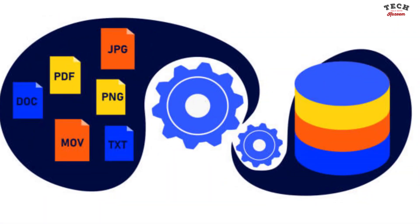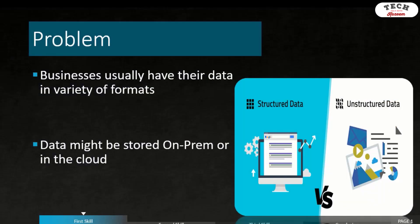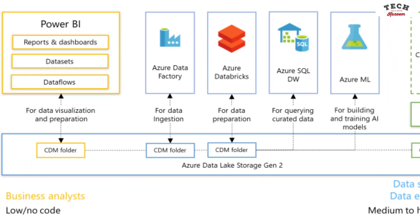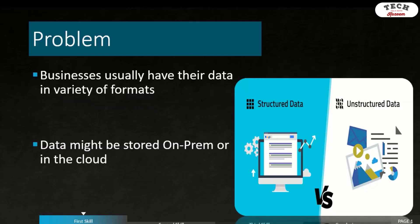This data that businesses have is usually stored in a variety of formats. Some of them structured, like the data stored on SQL Server. Some are semi-structured, such as data stored as JSON, XML file, and so on. And some of them are unstructured data — for example, flat files, data in video format, and so on. This data might be on-premises or stored in the cloud. We have tools or services on Azure that can help us put this data to good use regardless of the format, though some will require transformation first before you can gain insight from it.